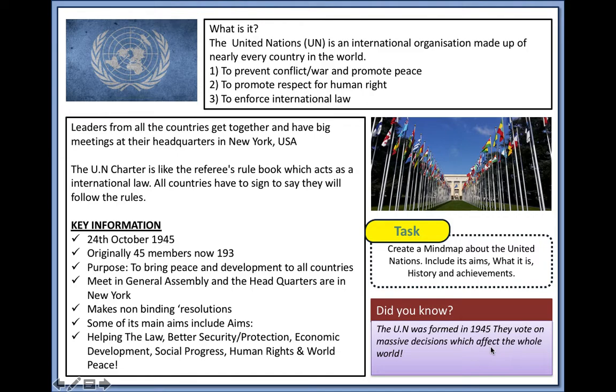The UN originally had 45 members but now has 193 members, which is nearly every country in the world. It has a Security Council with five permanent members — those being the victorious powers during World War II: the UK, France, USA, China and Russia.